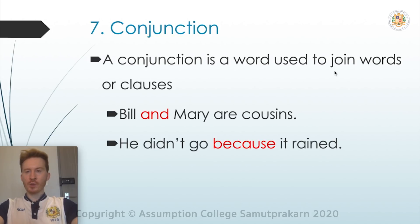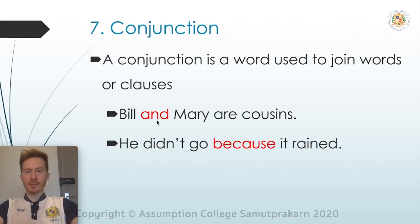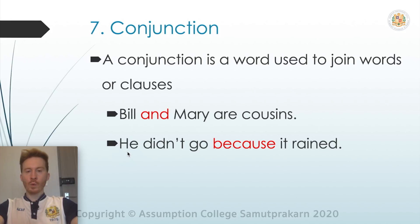Conjunctions join words or clauses. For example: 'Bill and Mary are cousins.' And is a conjunction — it joins Bill and Mary. Another example: 'He didn't go because it rained.' Because is a conjunction — it joins the two clauses 'he didn't go' and 'it rained'. Why did he not go? Because it rained.